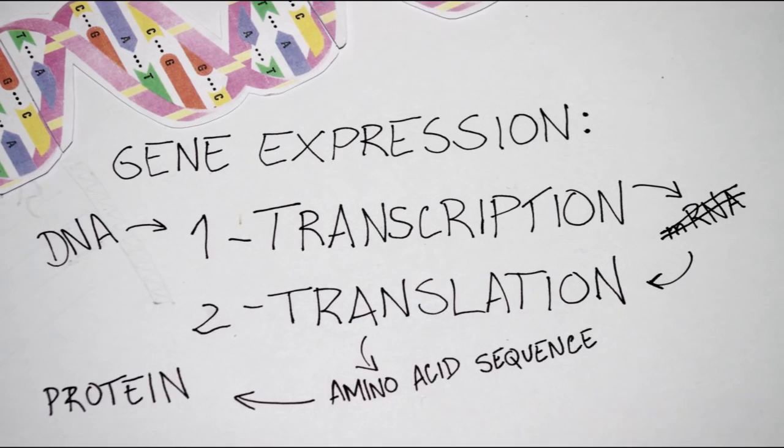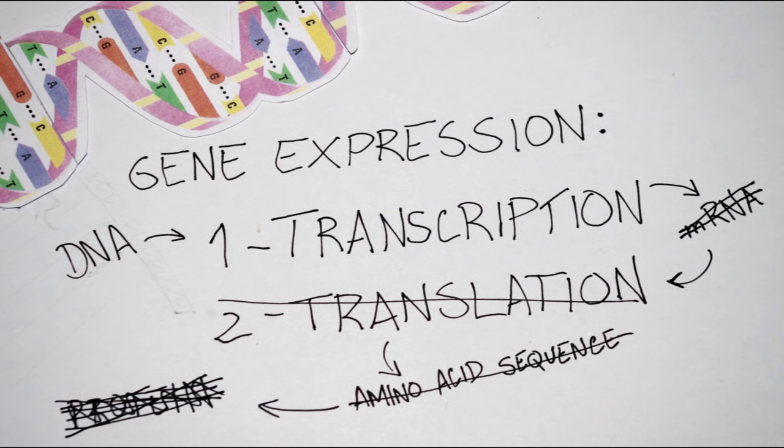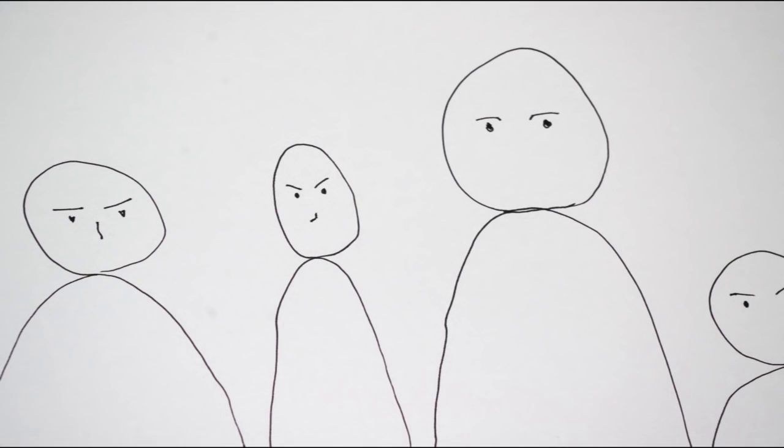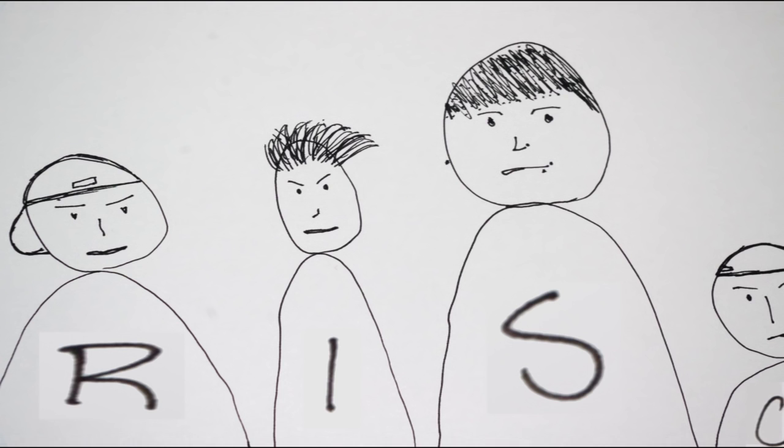With no mRNA, there is going to be no translation and the protein is not going to be produced. In our previous example, RISC could be a gang of bullies from the boy's class who chase him, steal and destroy the message, so that the instructions it contains cannot be completed.